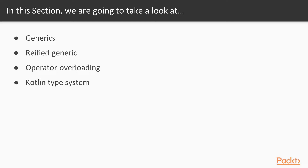We will learn about generics and we'll see how Kotlin can escape type erasure with reified generics. We will also see how operators can be overloaded, and finally we'll take a look at Kotlin's type system and see how it differs from Java's type system.